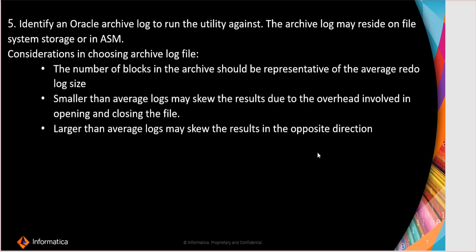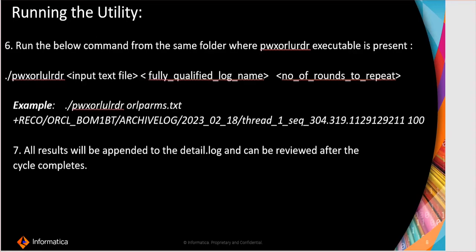Next, we need to identify the Oracle archive log on which you need to run this utility. This is the command for running this utility: the utility name, the file which you have created, the Oracle archive log which you are trying to run this utility on, and the number of rounds to repeat.